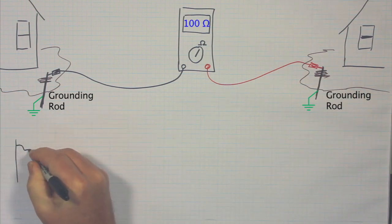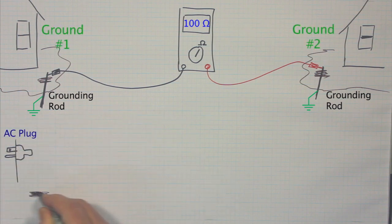The potential difference between two grounds is oftentimes of a significant amount. This means that there is a voltage difference between the two grounds.